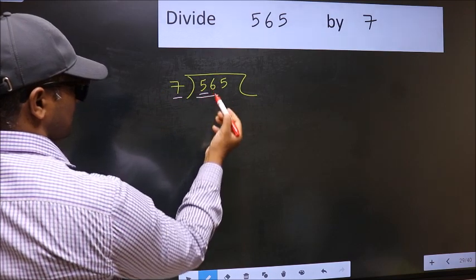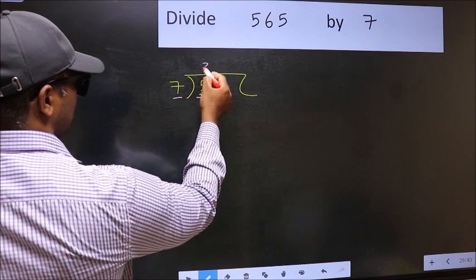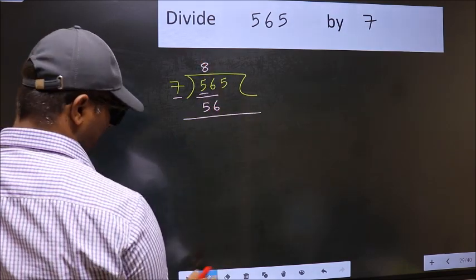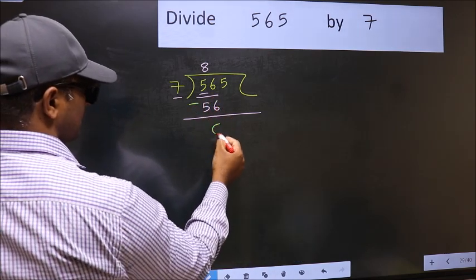So we should take two numbers, 56. When do we get 56 in the 7 table? 7 times 8 is 56. Now you should subtract. 56 minus 56, 0.